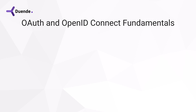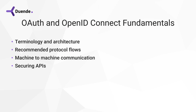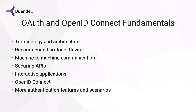So what to expect in this series? You'll hear about OAuth terminology and architecture as well as the current OAuth 2.1 version in this video. We'll also cover the recommended protocol flows with their application scenarios. In the next part we'll dive into one of those scenarios: machine to machine communication. You will also see a video where we learn the concepts around securing APIs, and there is one about interactive applications involving a user, where we will look at OpenID Connect. The final video covers more advanced topics around authentication features and application scenarios.